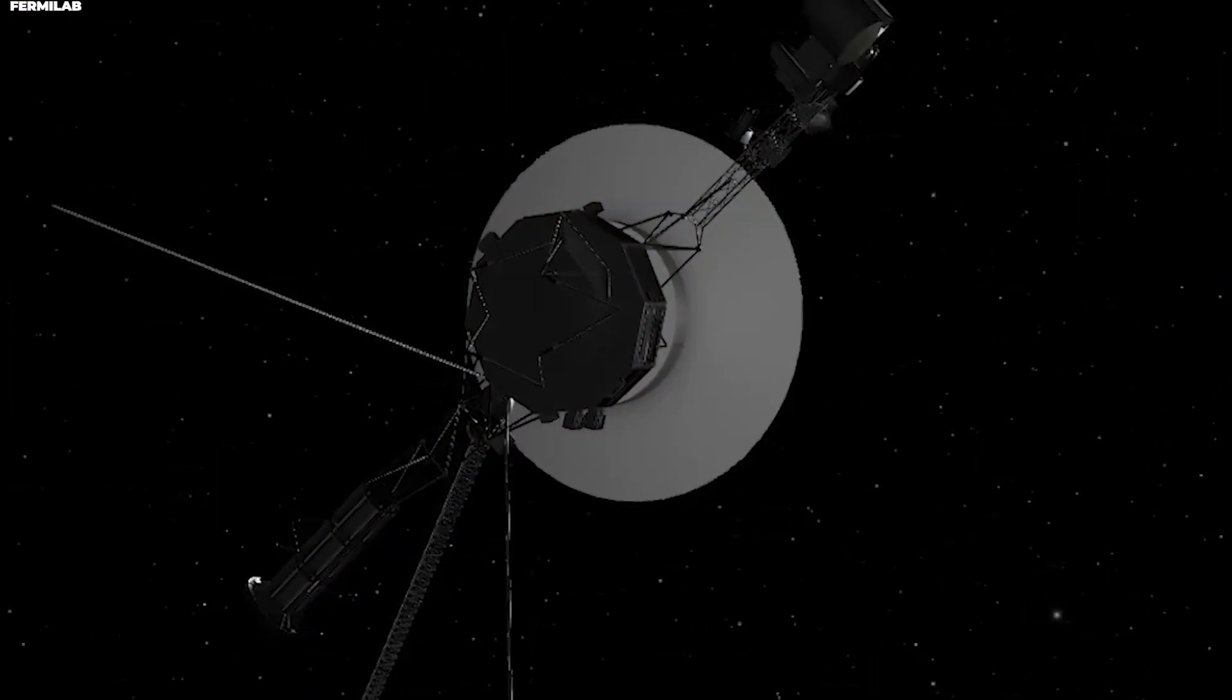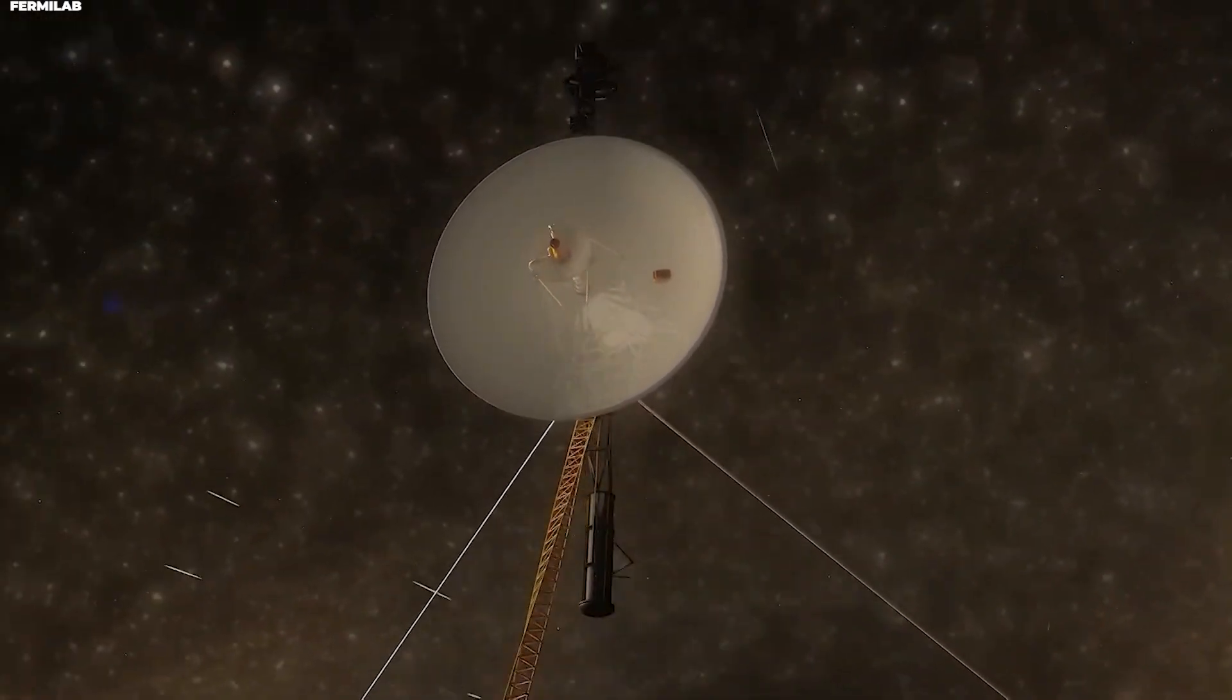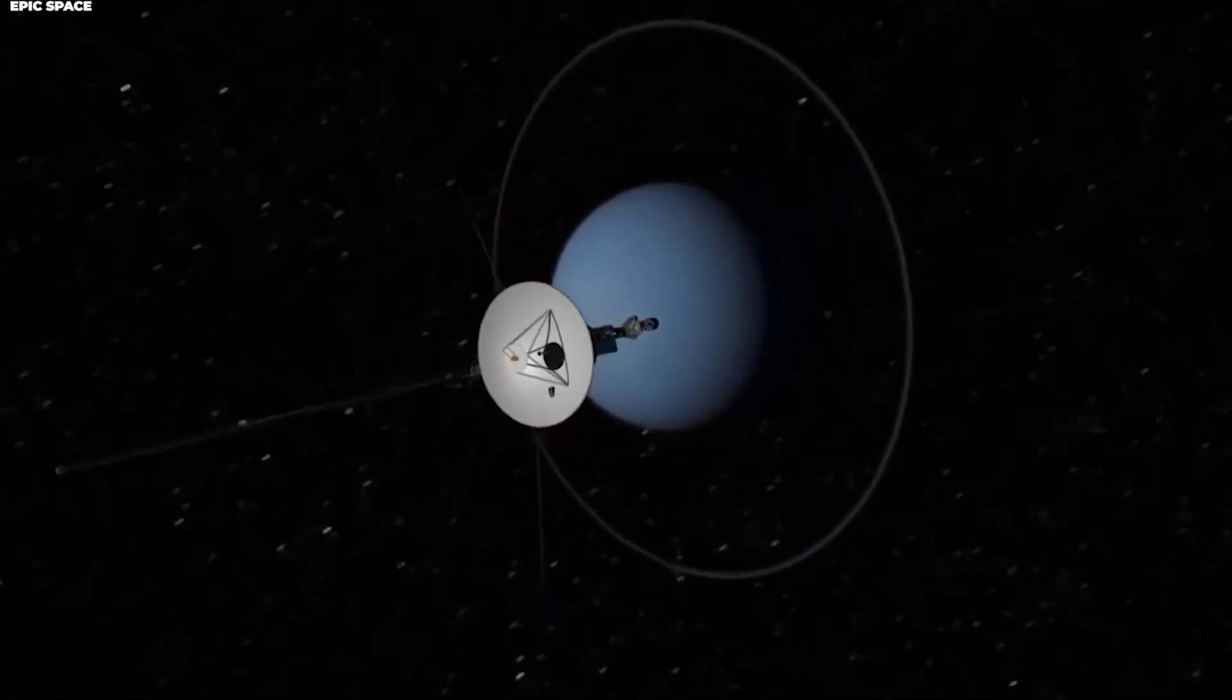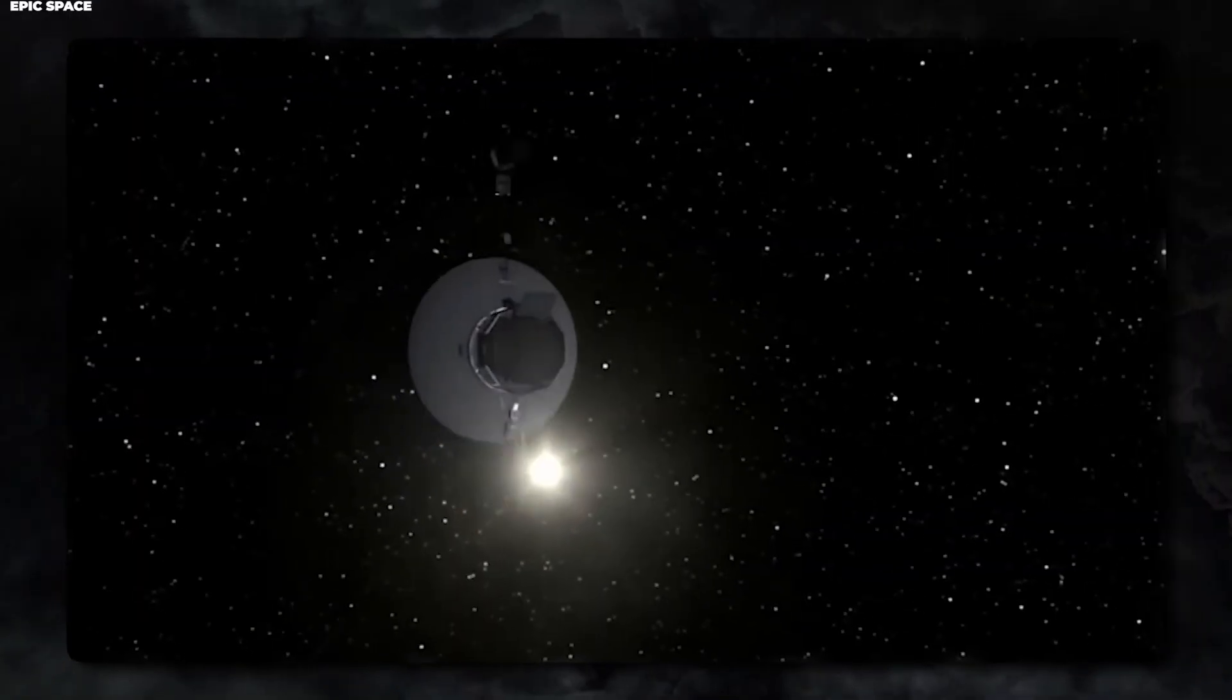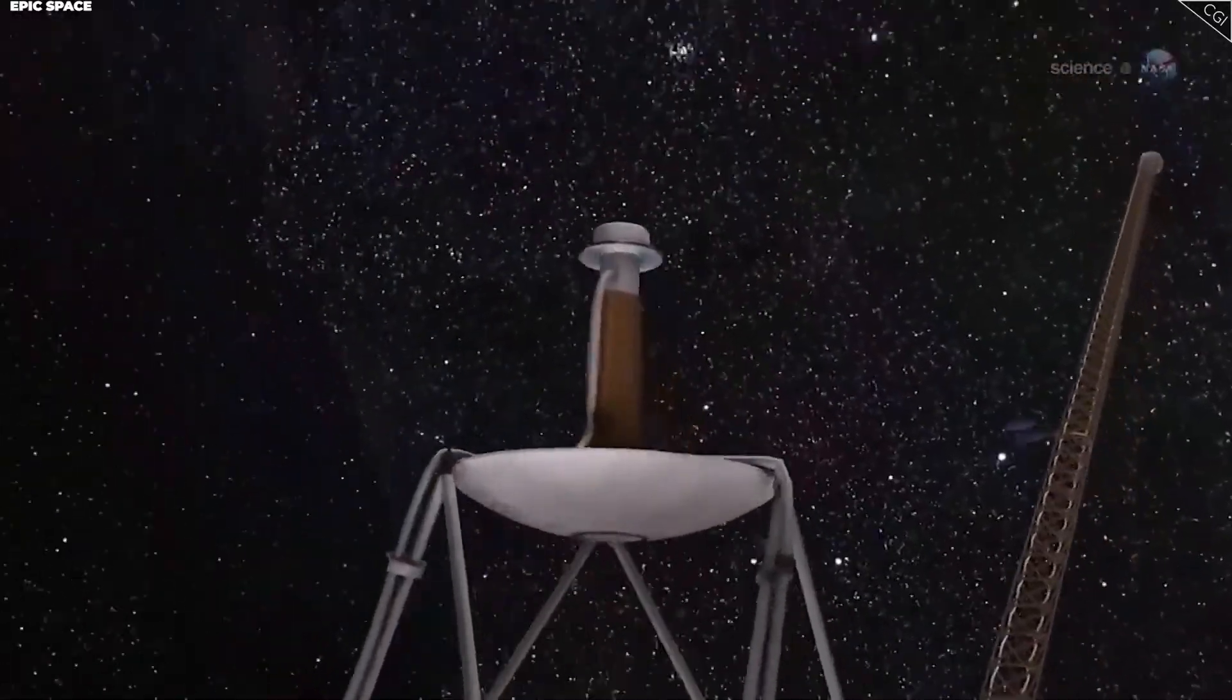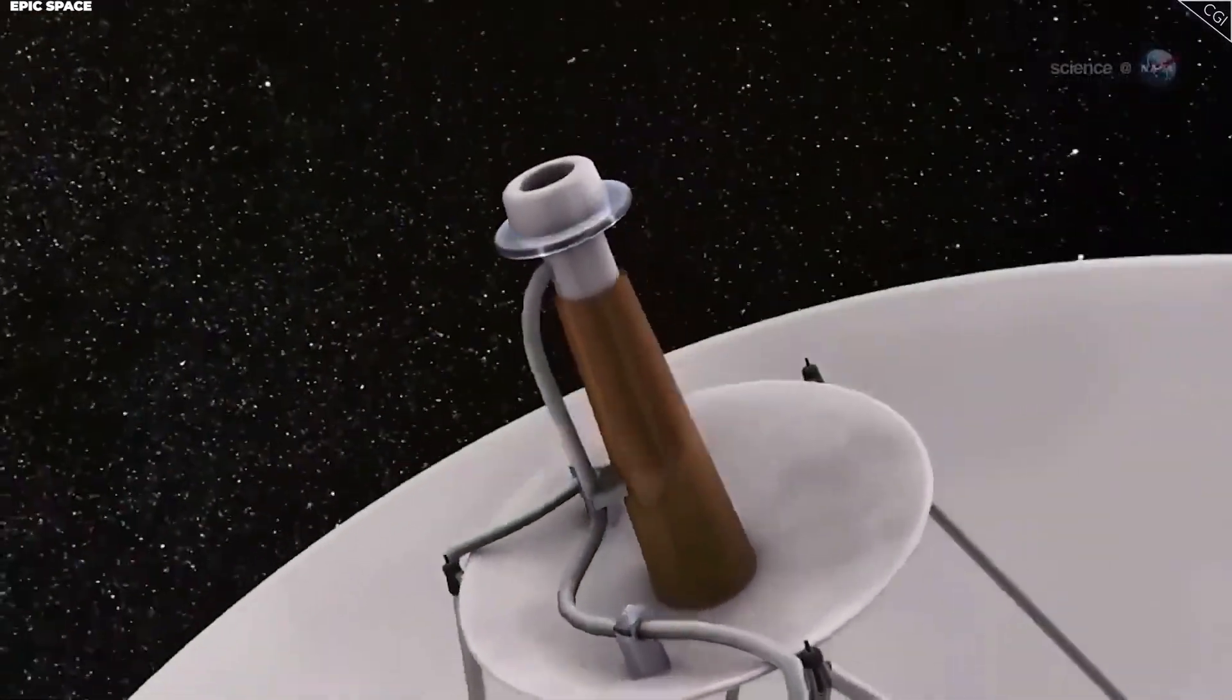This was an unprecedented opportunity. Think about it. Voyager 1 is already in interstellar space, far beyond the planets, operating in an environment that very few spacecraft have ever reached. And now, an object from another star system was going to pass through that same region. It was like two travelers from different parts of the universe having a chance encounter in the cosmic wilderness.